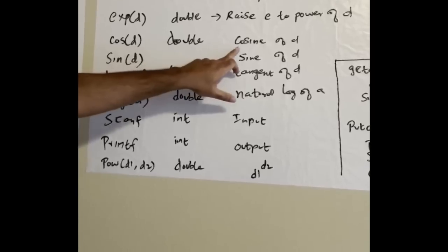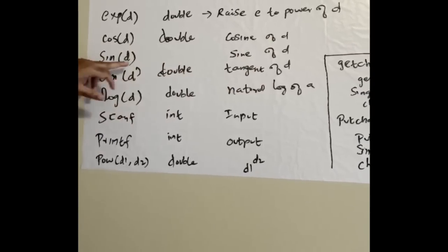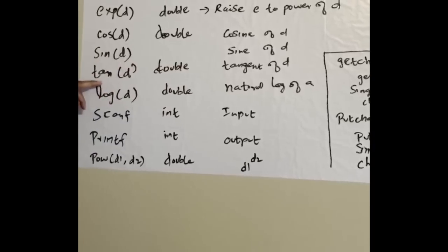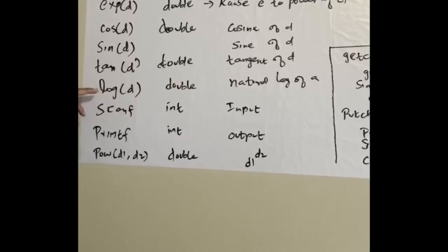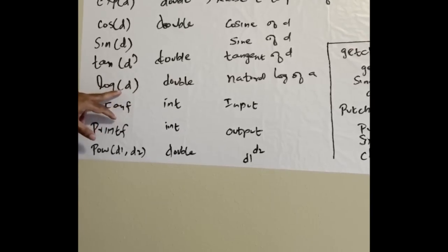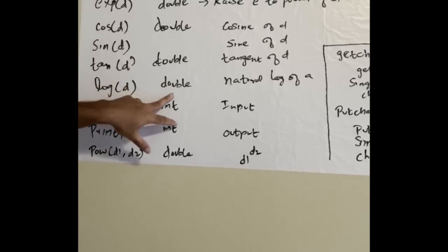Sin(d) is sine value of d. Tan is sine by cos, so tangent of d. Log(d) is logarithmic, returns a double value - natural log of the variable a.